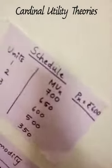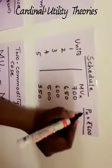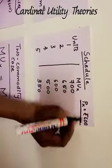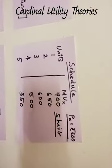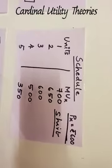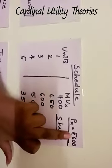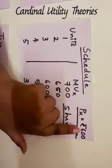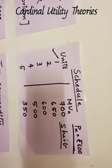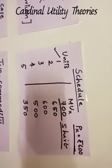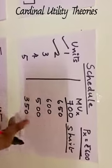For this schedule, the price is given as Rs. 600 and I am taking the example of a shirt. The consumer is consuming only shirts. At that particular point of time, where the price of the shirt is given as Rs. 600, he is buying the first shirt for 700 rupees utility. Then he is buying the second shirt. The law of diminishing marginal utility operates.